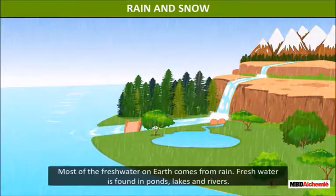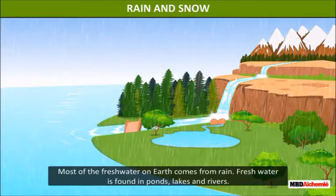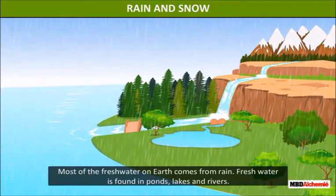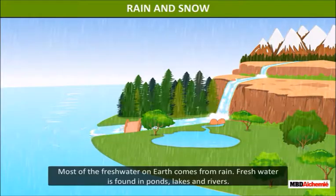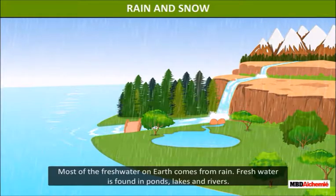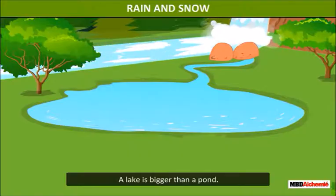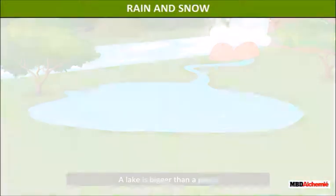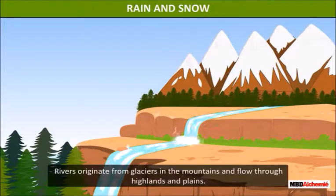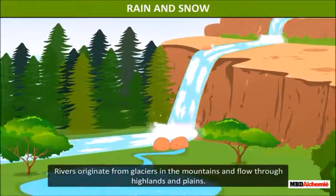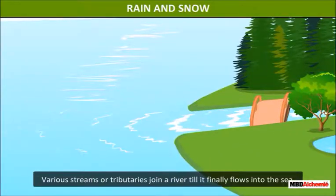Most of the fresh water on earth comes from rain. Fresh water is found in ponds, lakes, and rivers. A pond is a small water body surrounded by land. A lake is bigger than a pond. Rivers originate from glaciers in the mountains and flow through highlands and plains. Various streams or tributaries join a river till it finally flows into the sea.